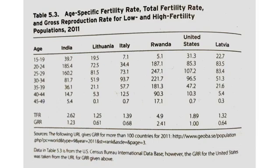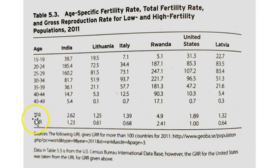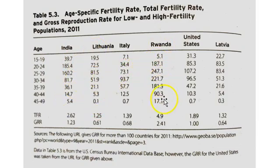Here's another international comparison that breaks things down into different age groups, so we can compare the age-specific fertility rate along with the total fertility rate and the gross reproduction rate at the bottom. Going across, we can see the total fertility rate differences for India, Lithuania, Italy, Rwanda, the United States, and Latvia, and below that the gross reproductive rate, with similar patterns. Recall that the gross reproductive rate is usually about half of the total fertility rate, because that's the total fertility rate for girls only. Looking at the age-specific fertility rates, we see quite a big difference across countries, with rather large numbers for Rwanda — its total fertility rate is 4.9, the highest on the table.